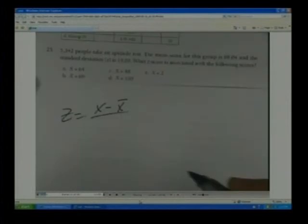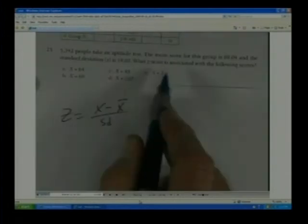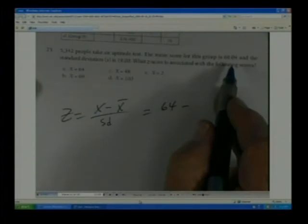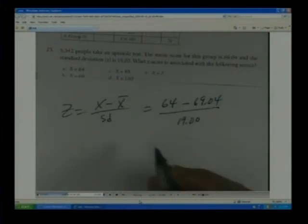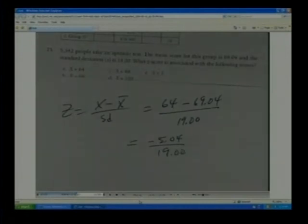Just according to the formula, our z equals x minus the mean over the standard deviation. So we've got here x is 64, the mean is 69.04, and the standard deviation is 19. So we just go through, we get -5.04, divide that by 19.